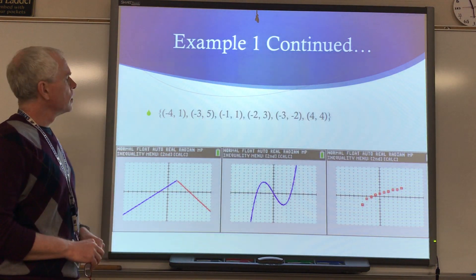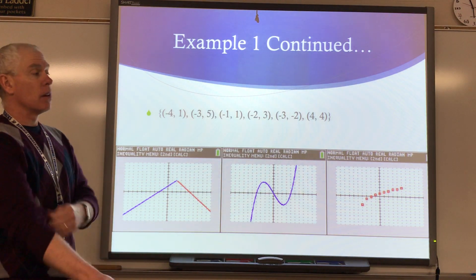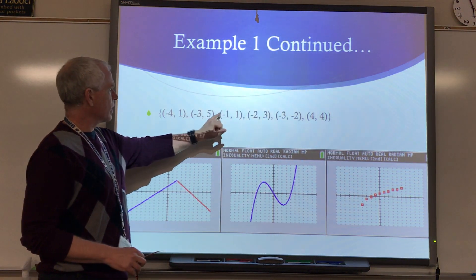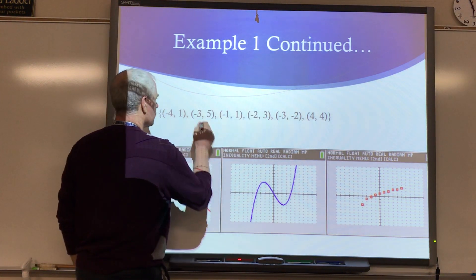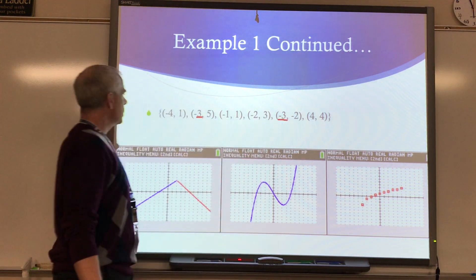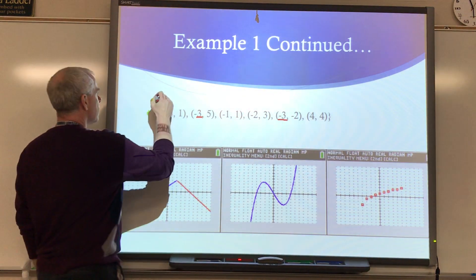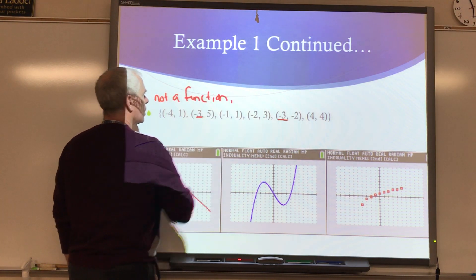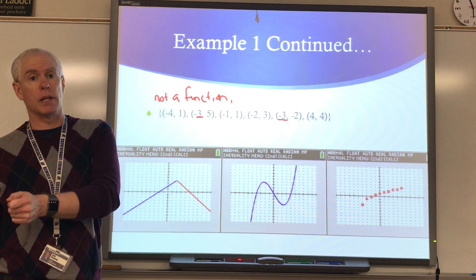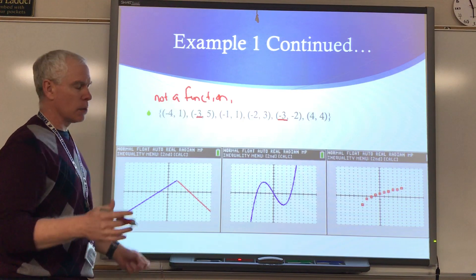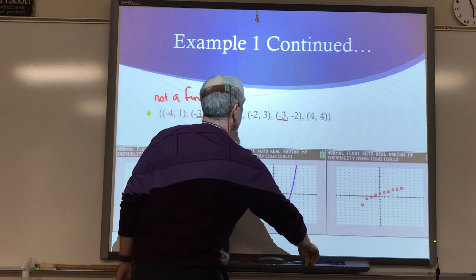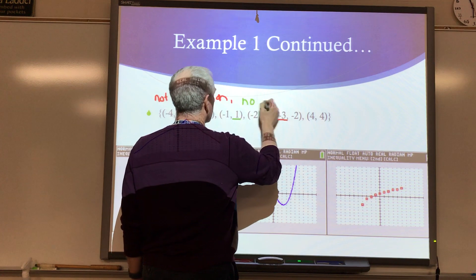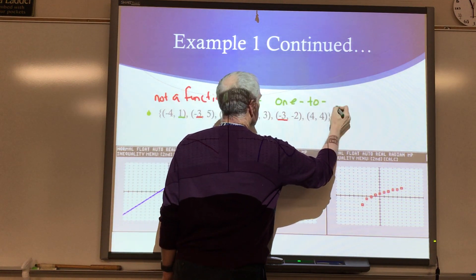What about this relation? A function requires every element in the domain to map to exactly one element in the range, meaning I can't have any duplicate x values. As I'm looking through my x values, I recognize that negative three is repeated, so this is not a function. Now the definition for one-to-one is that every element in the range maps back to exactly one element in the domain. So now I'm looking for the y values to see if they repeat. I have a y value that repeats, so we would say this is not one-to-one.